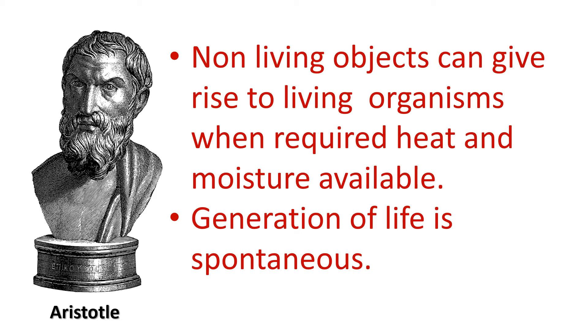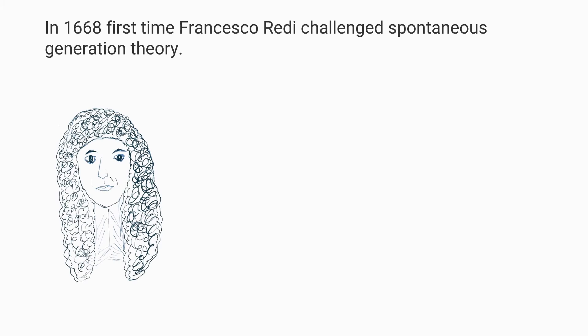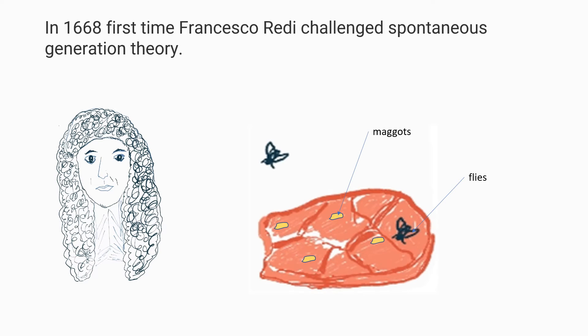This theory held its place for two millennia. In 1668, for the first time, Francisco Redi challenged the spontaneous generation theory. As the prevalent belief was that maggots or flies generate from meat, with his experiment he showed this is not true — maggots spawn from flies, not from meat or decaying matter.